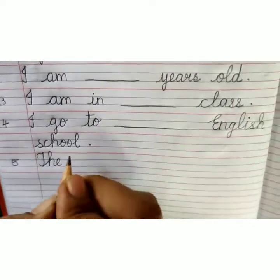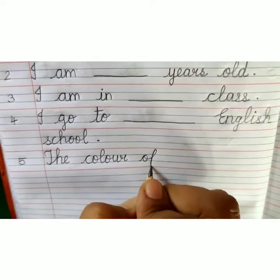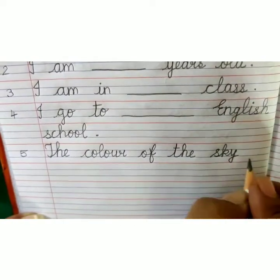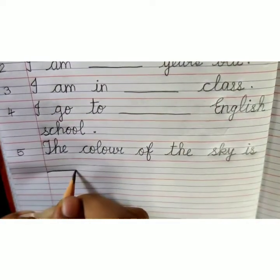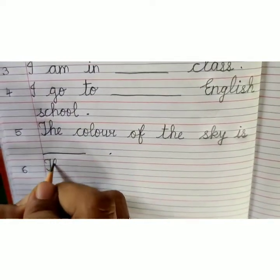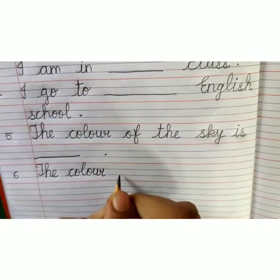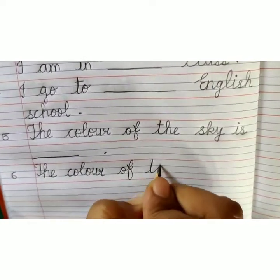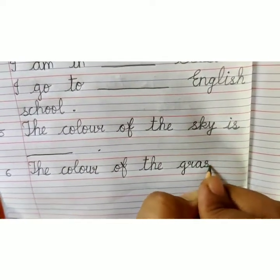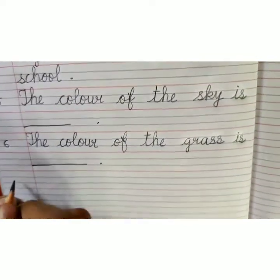Number 5: The colour of the sky is ___. Full stop. Number 6: The colour of the grass is ___. Full stop.